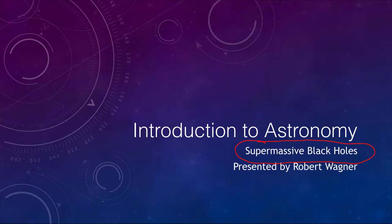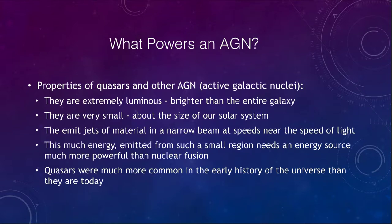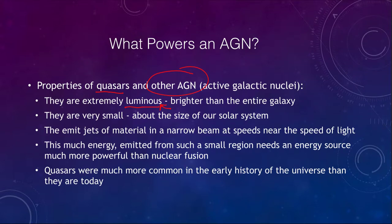To review some of the properties of quasars and other AGNs, or active galactic nuclei: first of all, we know that they are extremely luminous — brighter than an entire galaxy. Luminous means not only visible light, but also other forms of electromagnetic radiation as well.